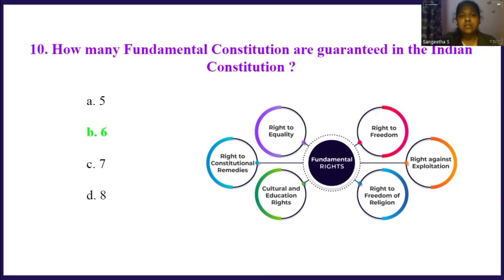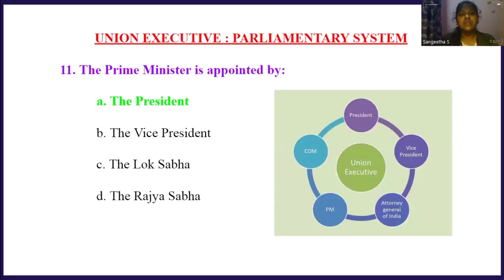The next concept is the union executive parliamentary system. The prime minister is appointed by: Option A, the president. Option B, the vice president. Option C, the Lok Sabha. Option D, the Rajya Sabha. The right answer is option A, the president. The president appoints the prime minister.